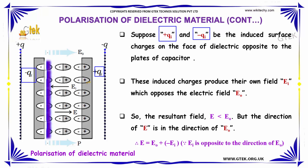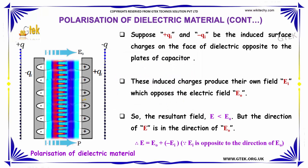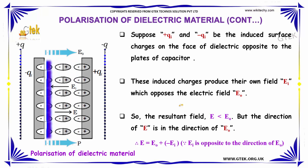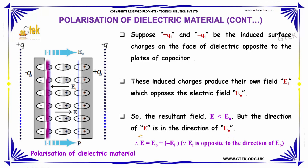These induced charges produce their own field E_I, which opposes the electric field E₀. So the resultant field E will be less than E₀, but in the same direction as E₀. The resultant field is given by E = E₀ − E_I, since E_I is opposite in direction to E₀.